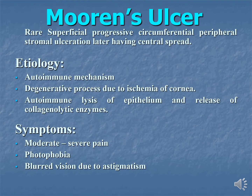Mooren's Ulcer is a rare ulcer characterized by superficial, progressive, circumferential, peripheral stromal ulceration which later has central spread. The etiology of this ulcer is unknown, but autoimmune mechanism may play a role, along with degenerative process due to ischemia of the cornea and autoimmune lysis of epithelium that releases collagenolytic enzymes.